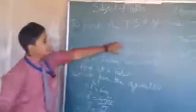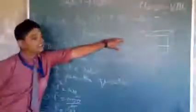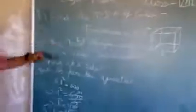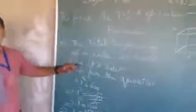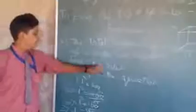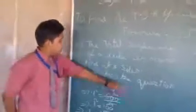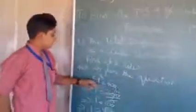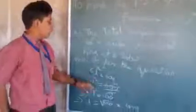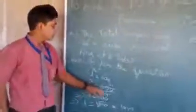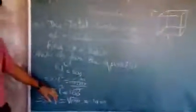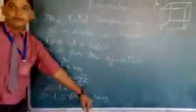The formula is 6L squared. The question is: the total surface area of the cube is 600 m². We need to find the side length. As per the question, 6L² = 600, so L² = 600 ÷ 6 = 100, and L = 10 m.